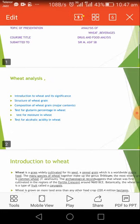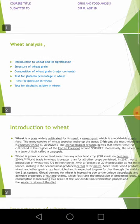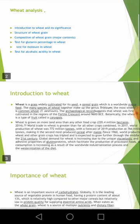First of all we will discuss about the analysis of wheat. It includes the introduction, then its significance, then the structure of wheat grain, then its composition, then the test for the gluten percentage — that is the protein — then the test for the moisture content in wheat, and then the test for the alcoholic acidity in wheat.